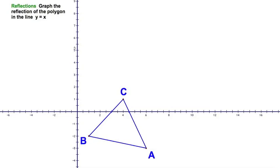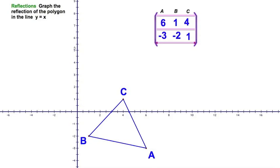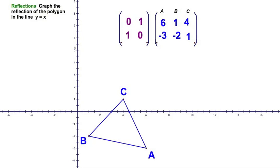Let's revisit the previous problem — taking triangle ABC and reflecting it over the line y equals x, but this time using matrices. The preimage matrix contains the coordinates: A is (6, -3), B is (1, -2), and C is (4, 1). I'll apply the transformation matrix for reflecting over y equals x and do the arithmetic just like last time.